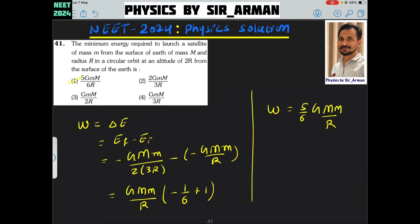Question number 41. The minimum energy required to launch a satellite of mass m from the surface of the earth of mass M and radius R in a circular orbit of altitude 2R.